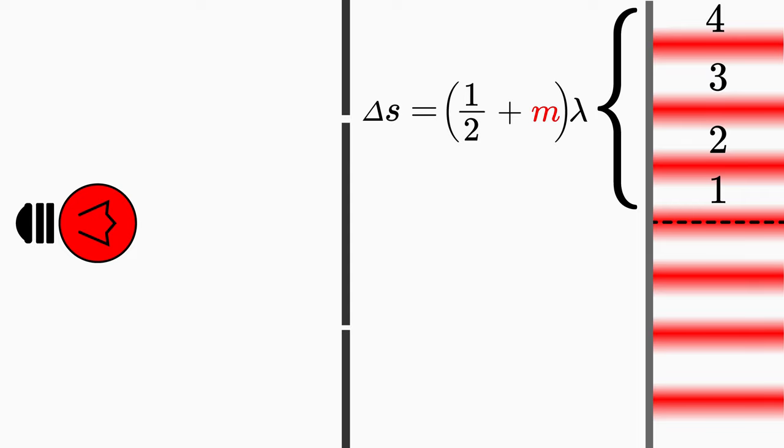Also, we want to reserve m equal to 0 for the main fringe. Thus, m ranges from 1 to infinity. However, there is a small problem if we insert 1 for m.